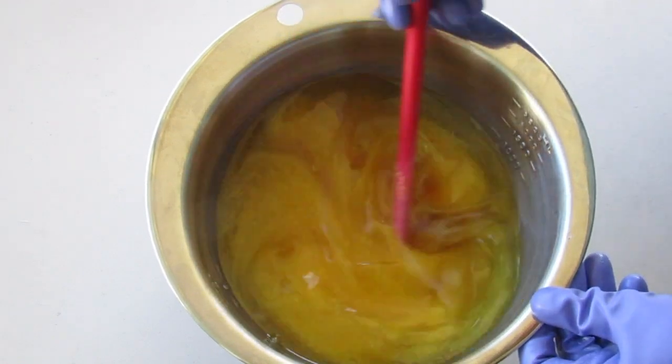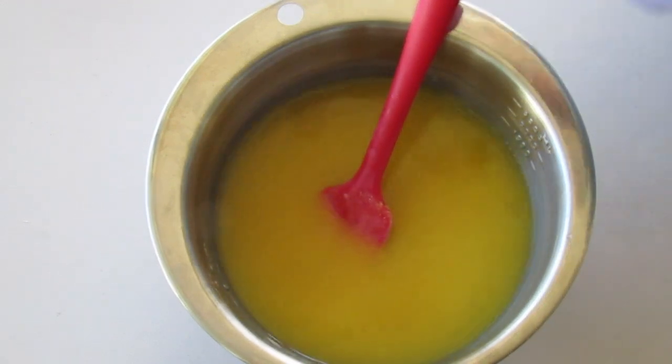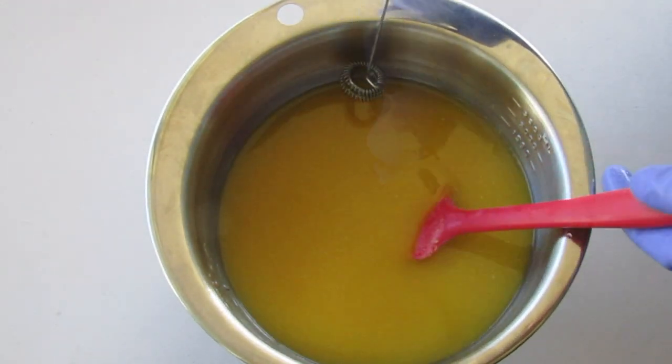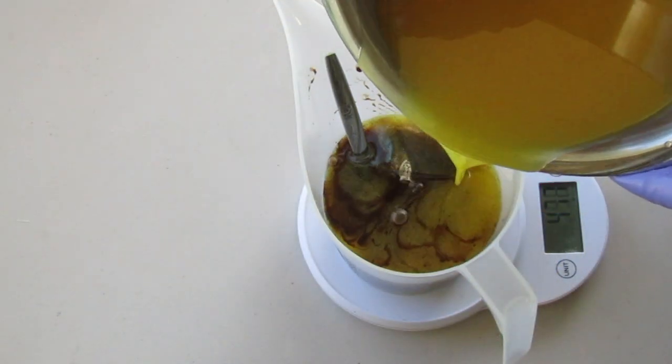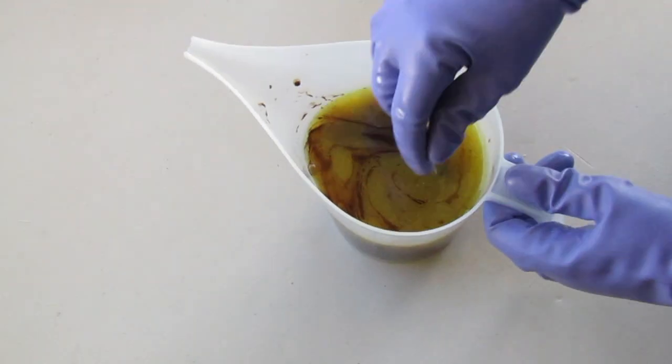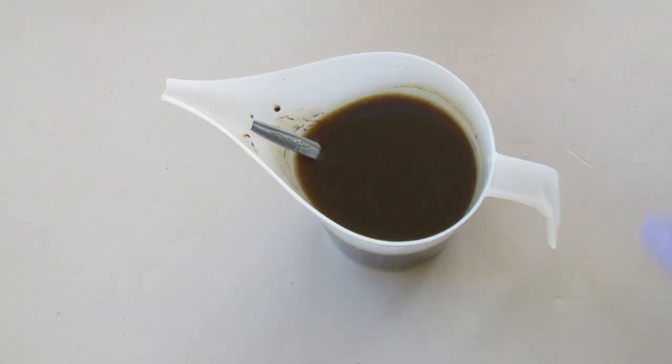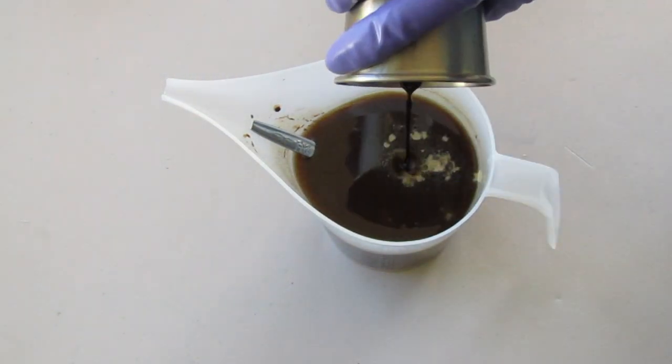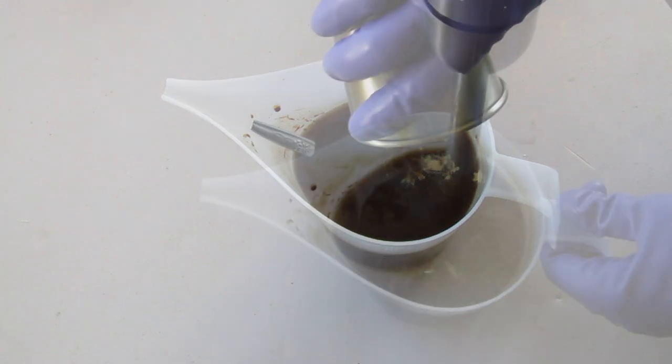Beeswax soap traces fast and soaping at higher temperatures also speeds up saponification, so I hand stirred and used the milk frother to combine the oils and lye before separating the batter into the different colourants. Peru balsam discolours the batter so it was added along with the essential oils to the cocoa coloured portion.